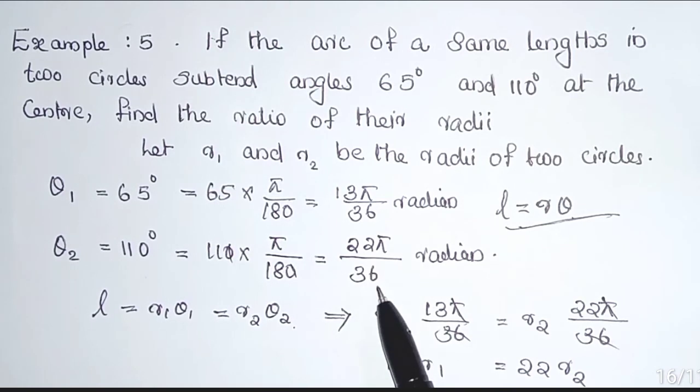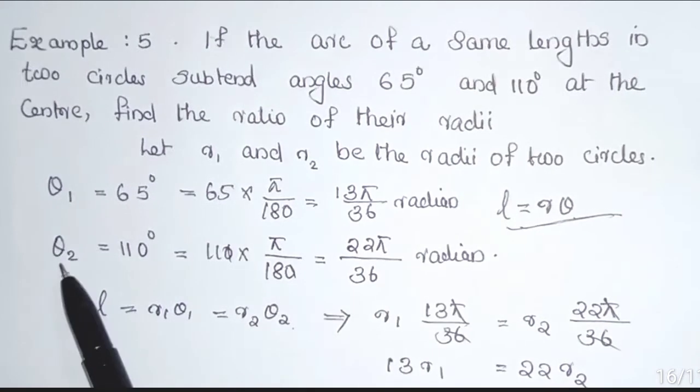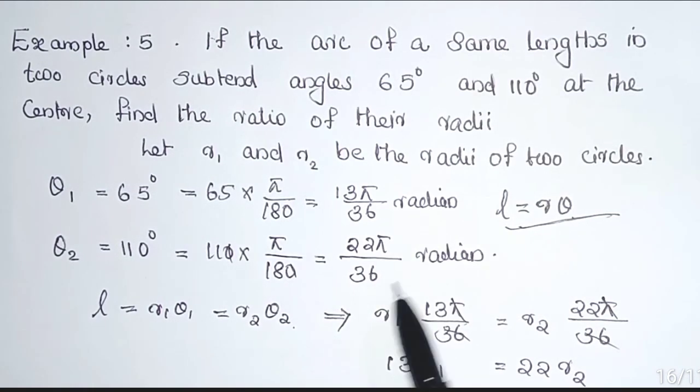In θ₁ and θ₂, we multiply numerator and denominator by 2. Then we get 22π/36. So θ₁ = 13π/36 radians, θ₂ = 22π/36 radians.